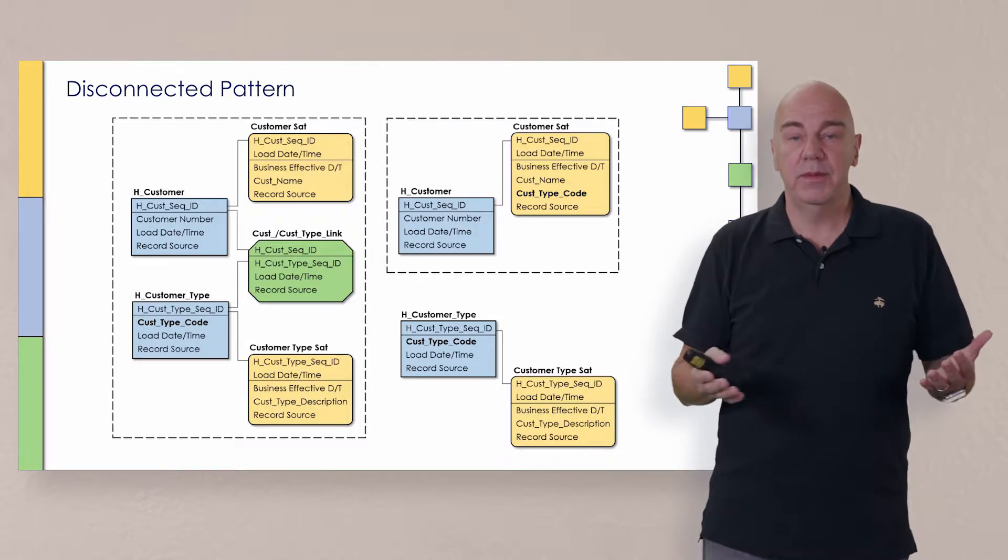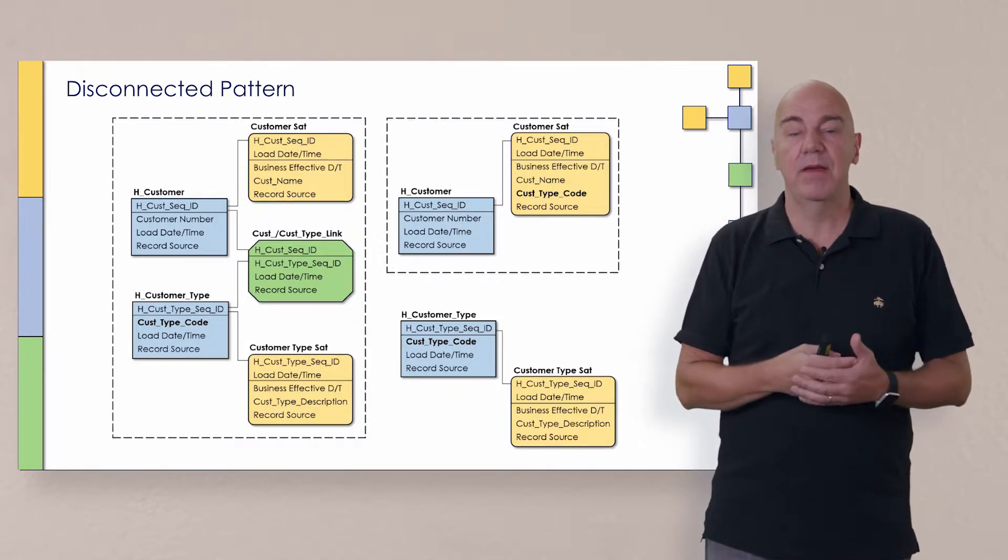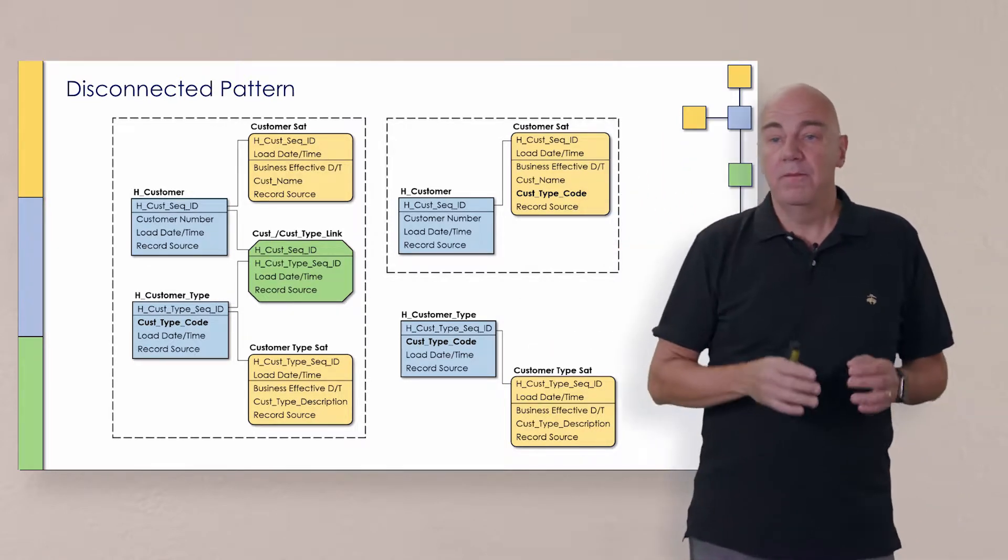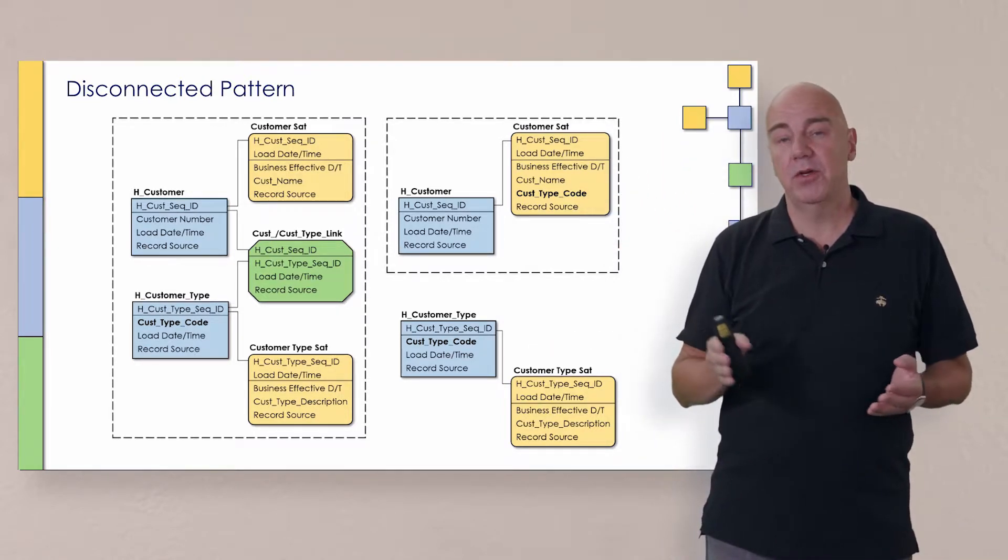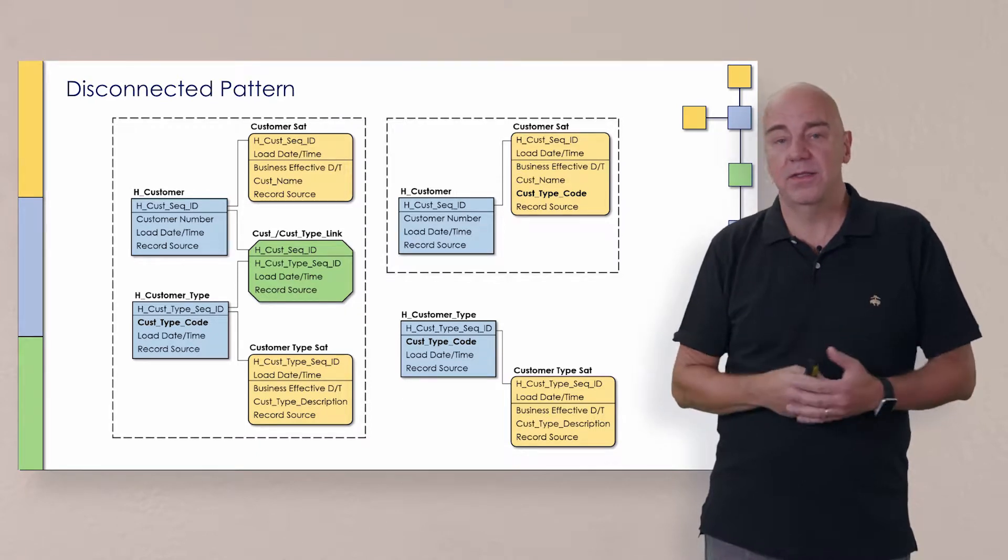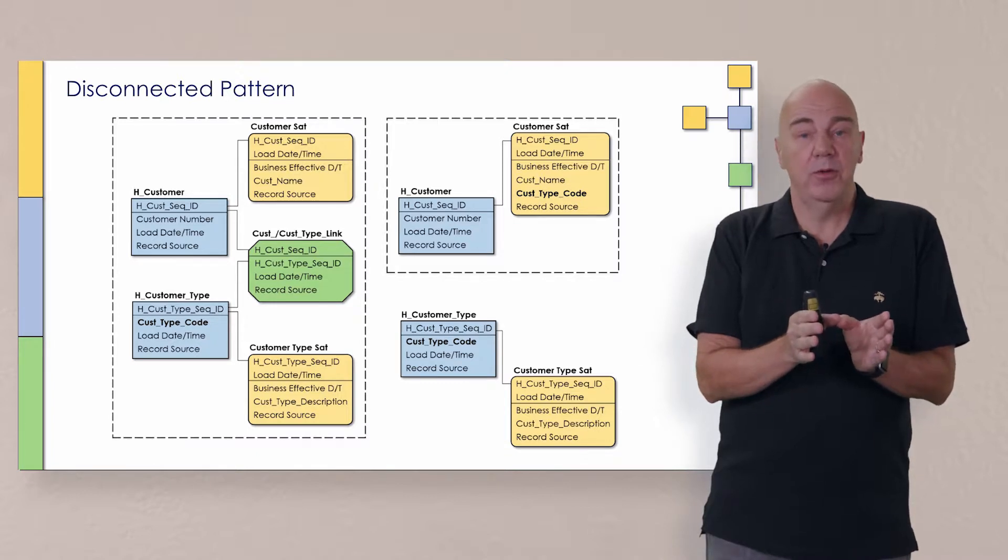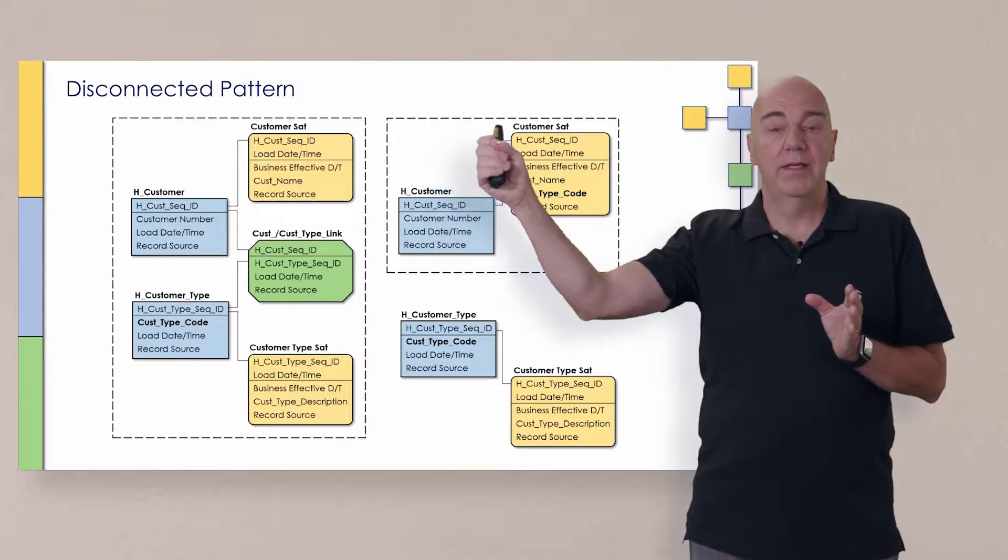So if I knew that I was going to classify my customers as a type of either small, medium, or large, now that's probably not too complicated. I can understand what that means. So on this alternate view here, alternate approach, I actually put the customer type code right into the satellite itself.